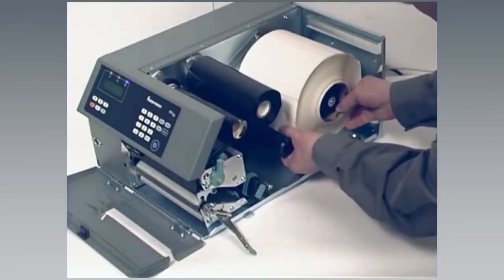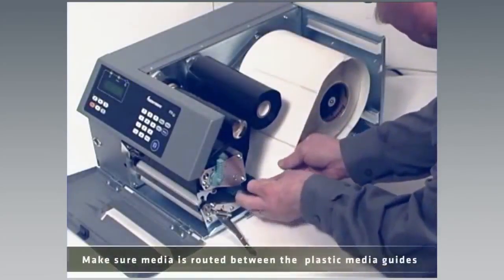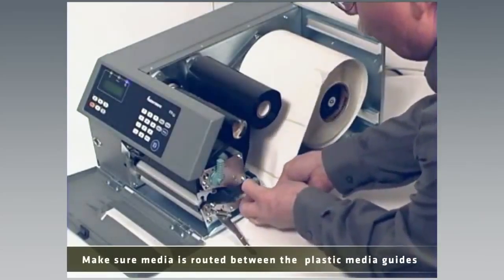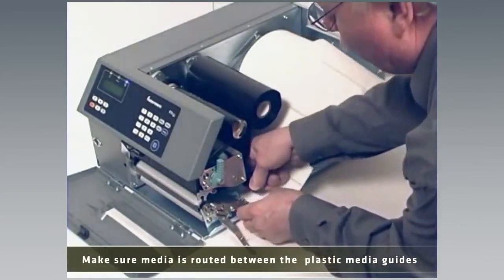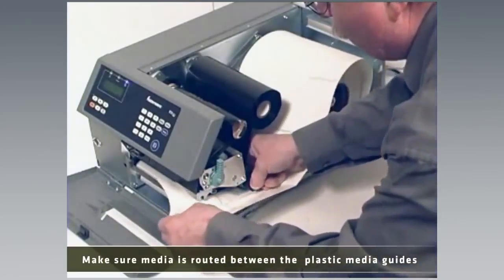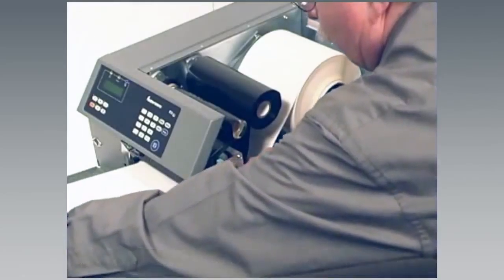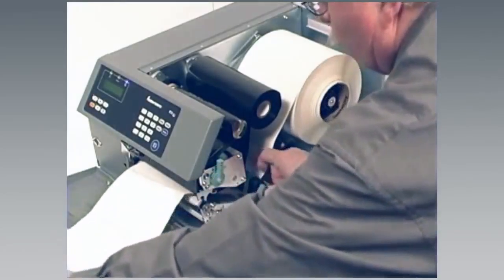Route the media under the slack absorber and forward toward the print mechanism. The slack absorber can be rotated for better access and then snap-locked in the open position. Route the media through the print mechanism and push it in as far as it will go. Pull out approximately 40cm of labels and remove the labels from the liner.